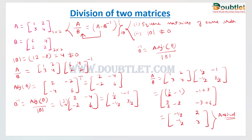This is how we obtain the division of two matrices. The operations used in this process are: finding the inverse, matrix multiplication, finding the adjoint of the matrix, and scalar multiplication.